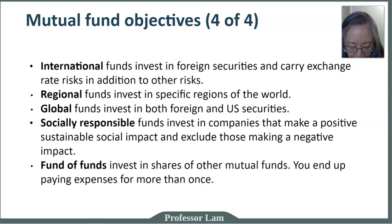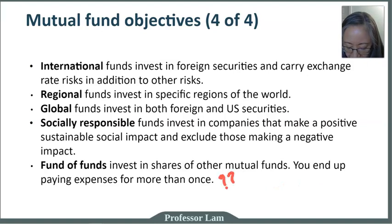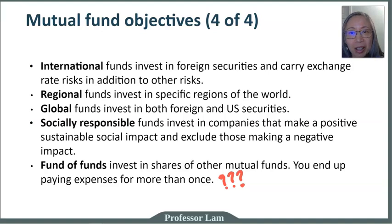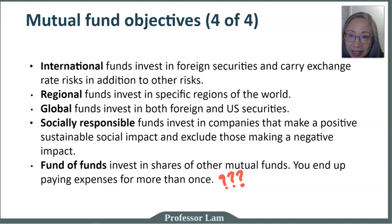The last type of fund is called fund of funds — they invest in shares of other mutual funds, meaning you end up paying expenses more than once, so there is very little case for buying a fund of funds. In summary, passive index investing tends to have the lowest expense ratios. Socially responsible funds also often follow a socially responsible index. We'll pause here and when we come back, we're going to look at different types of risk associated with investing in mutual funds. See you soon.